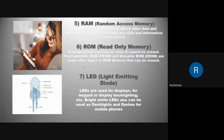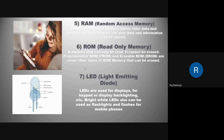RAM stands for Random Access Memory — it is erasable memory where older data can be erased and new data can be stored. ROM stands for Read Only Memory — a memory that can only be read. There are also programmable ROM and erasable ROM (EEPROM) as other types of ROM memory.